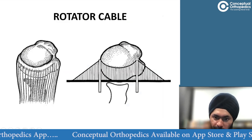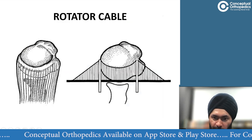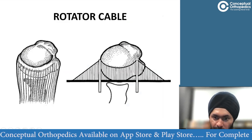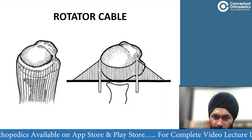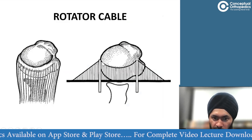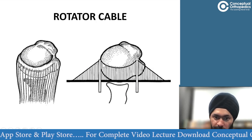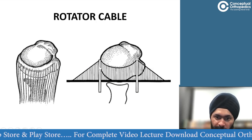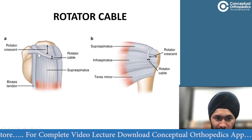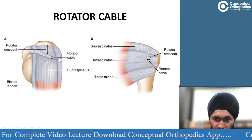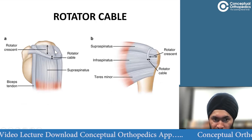There are two attachments of the rotator cable: the anterior attachment is at the junction of subscapularis and supraspinatus, and the posterior attachment is at the junction of infraspinatus and the posterior border of supraspinatus.